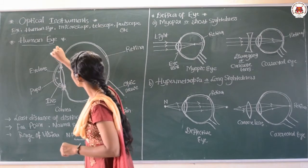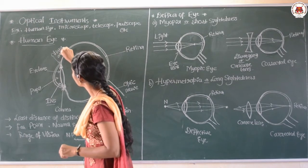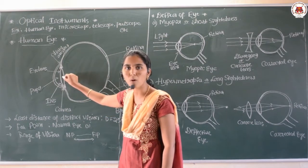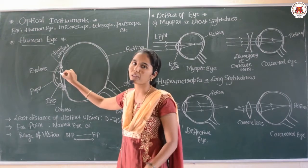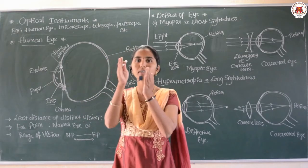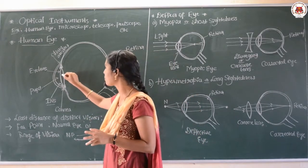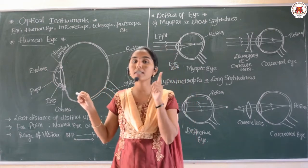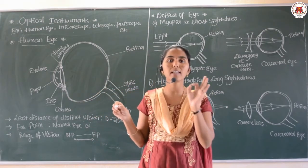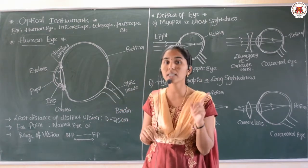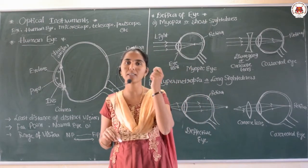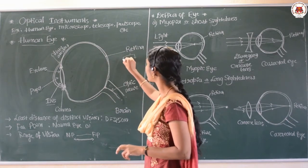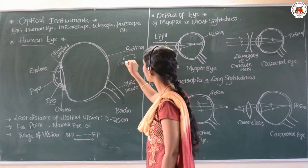These are the ciliary muscles. The ciliary muscles help us to hold the eye lens in a proper position and also help to change the focal length of the eye lens. A convex lens is present in our eye, and it converges the ray of light passing through it, so the converged light falls on the retina.